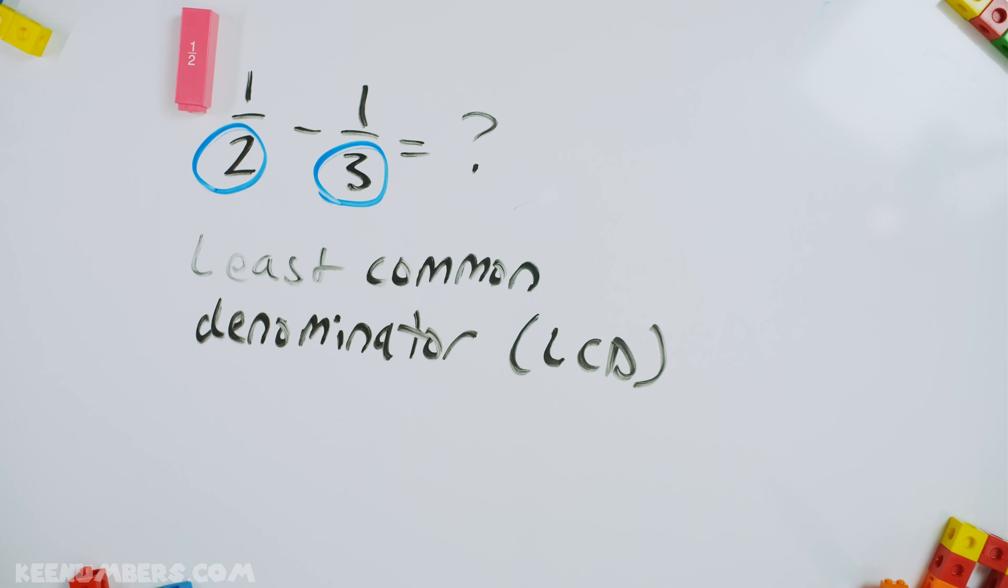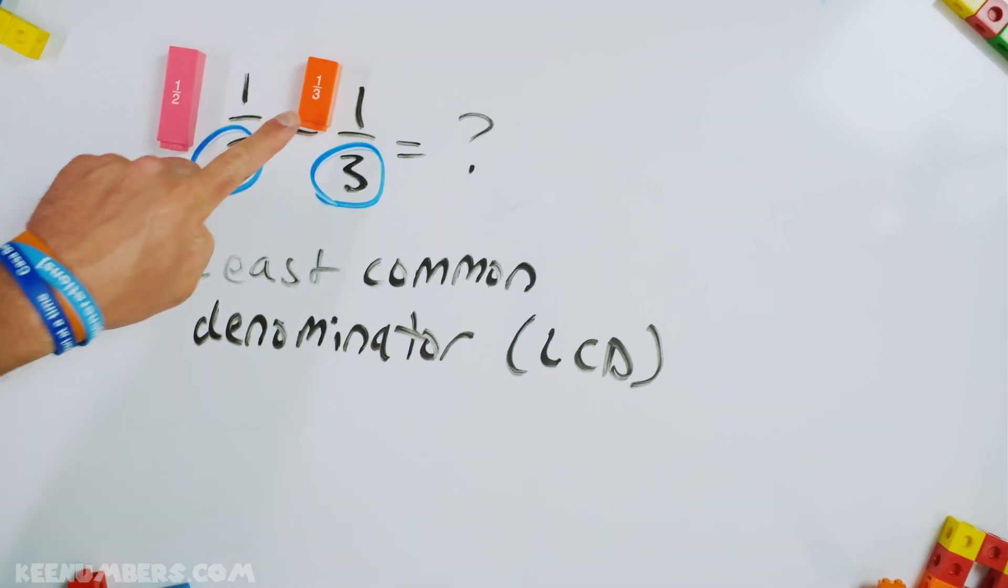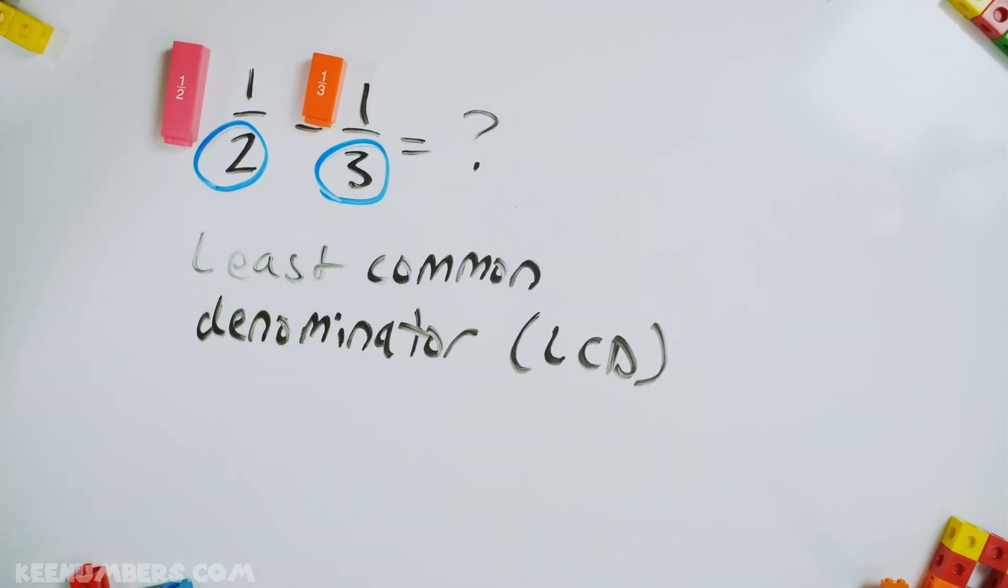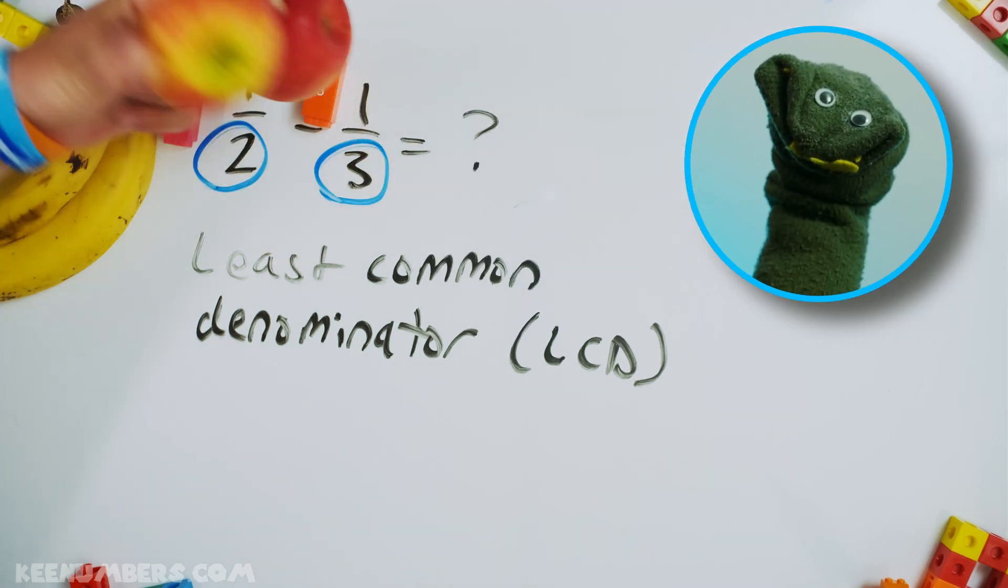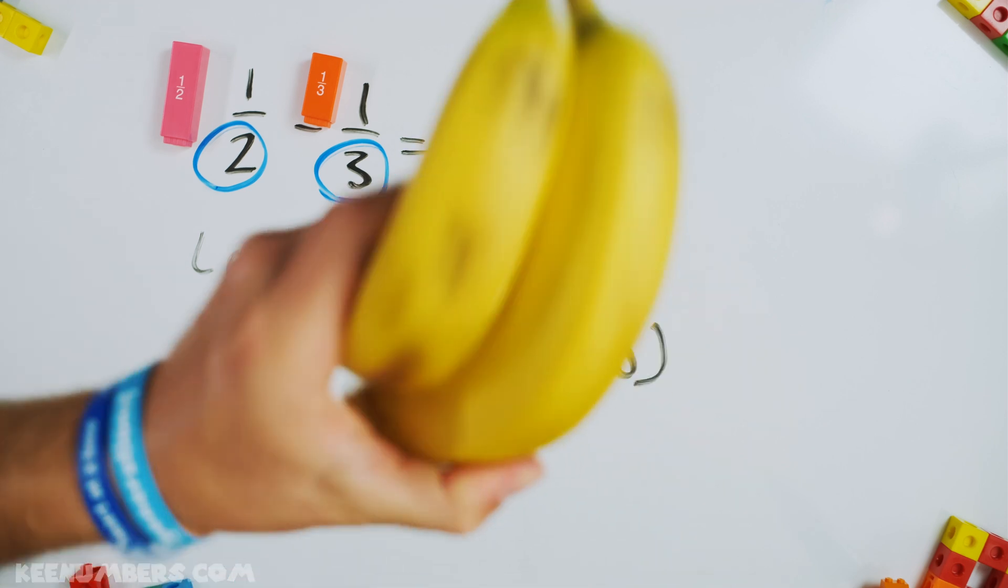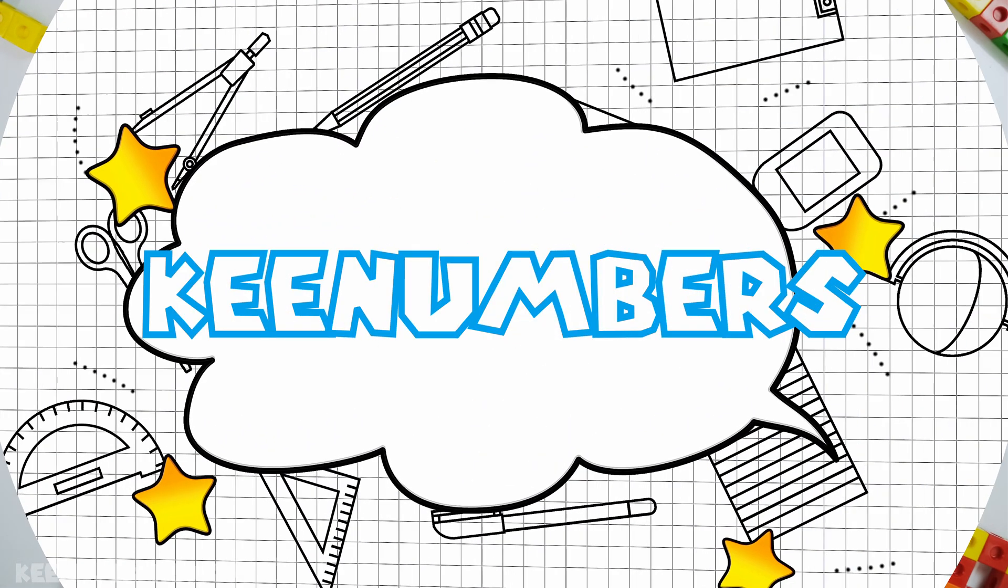We have a half and we want to subtract a third, but we can't do this. We can't subtract a half and a third. Why? Because the halves are like bananas and the thirds are like apples. They're different fruits and you can't add bananas and apples. But you can convert them so that they are the same.